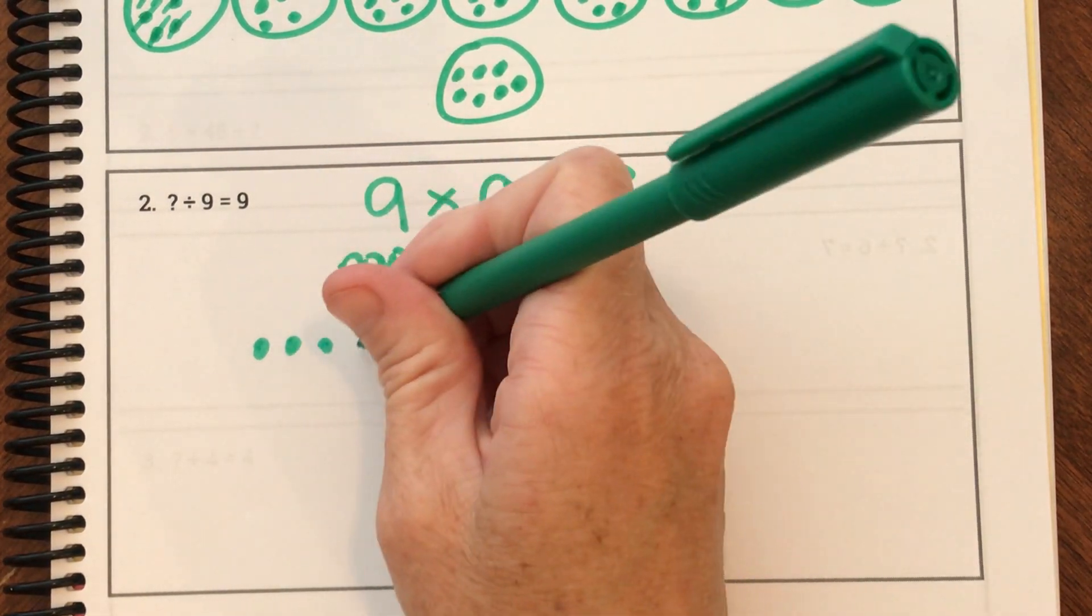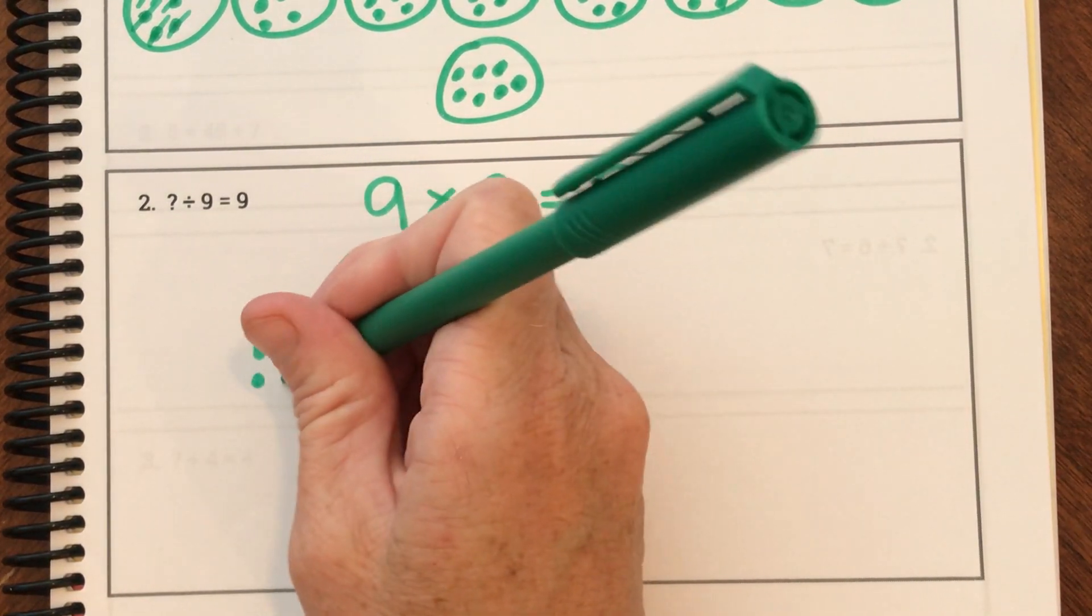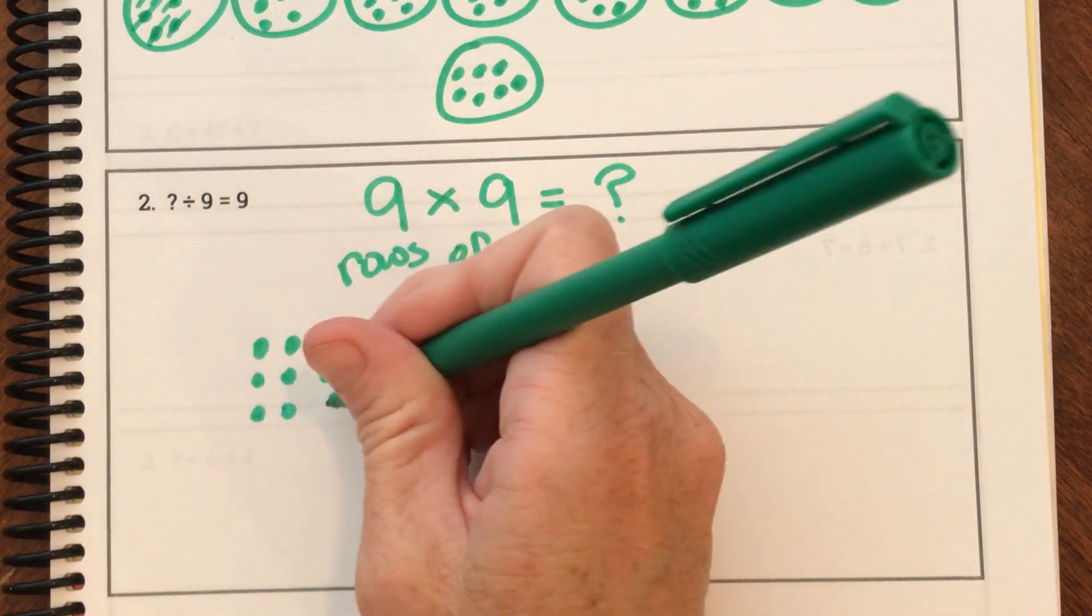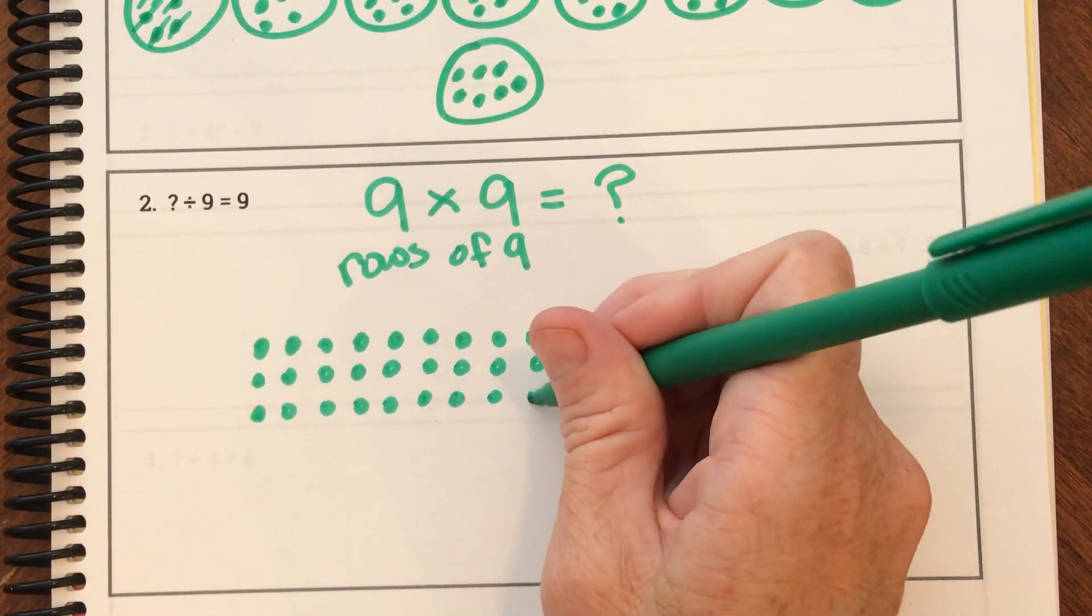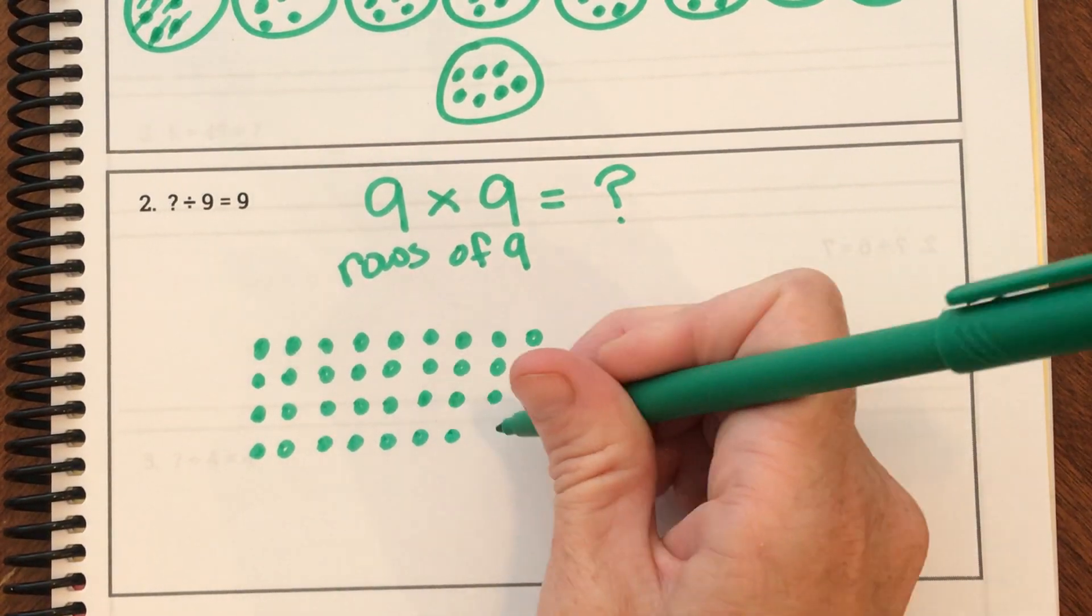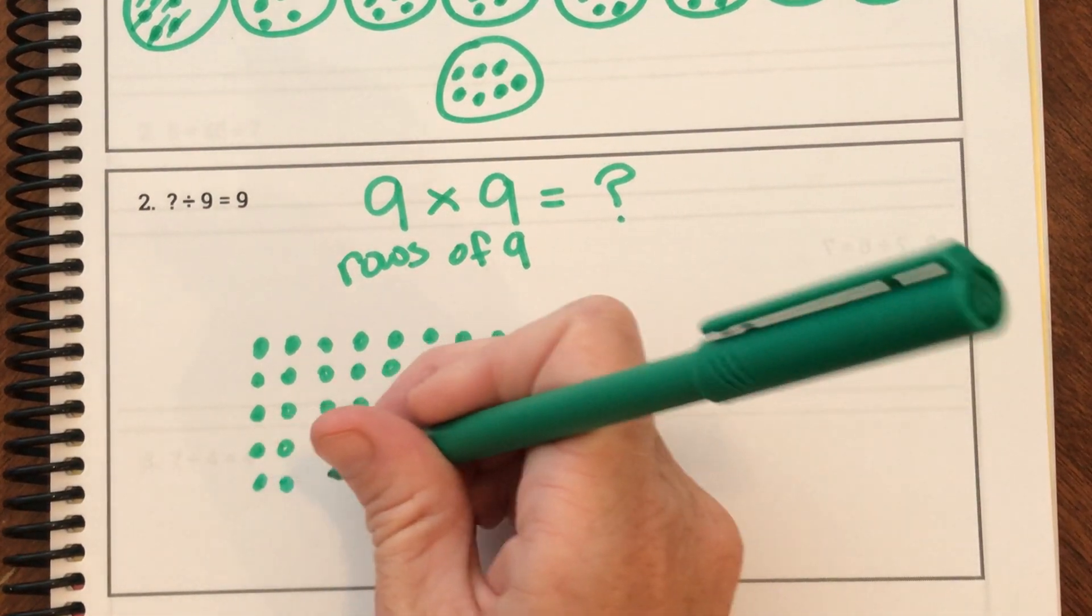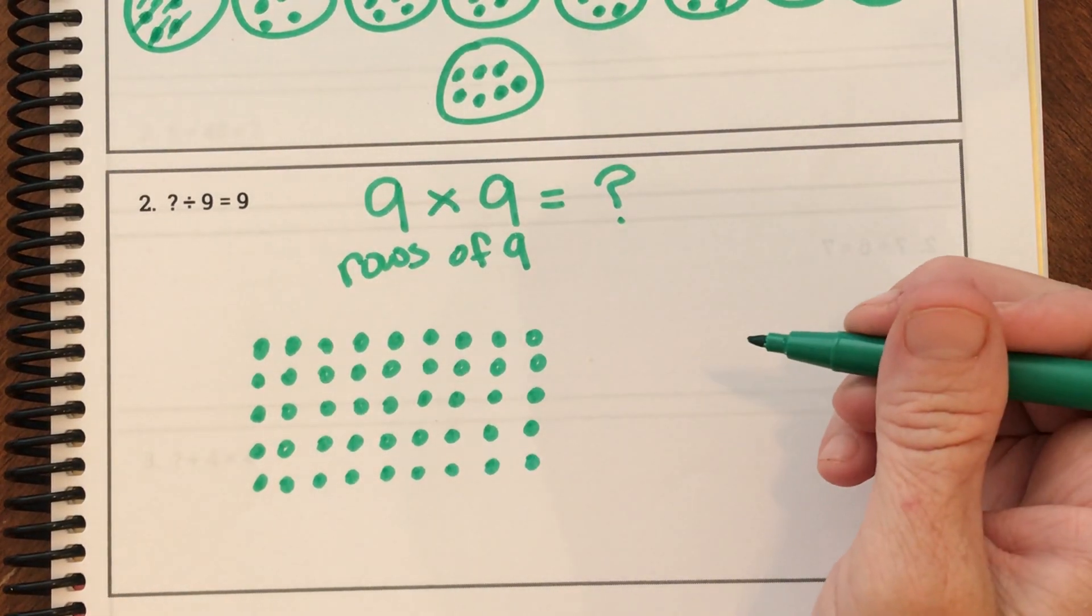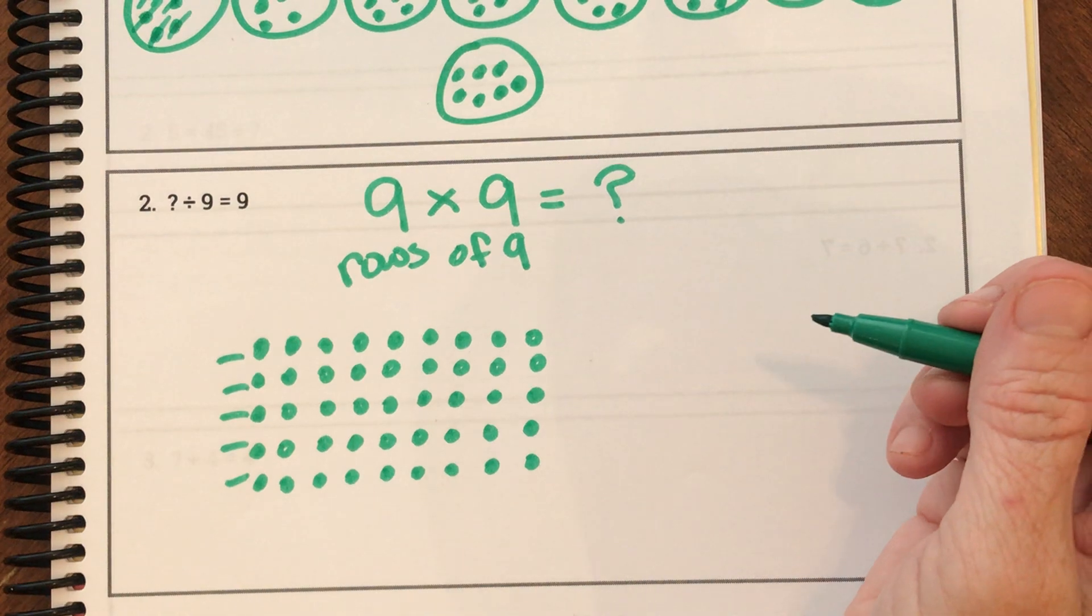Let's see what nine rows of nine are. [Counting and drawing array: one, two, three, four... continuing through multiple rows]. How many rows do we have so far? We have five rows. We still have four more rows to go. Okay, and we stopped at 45, friends. So let's keep going.